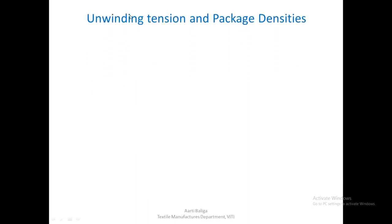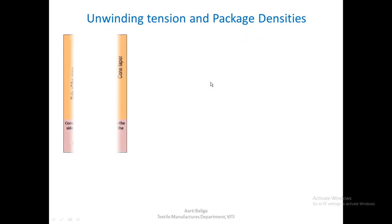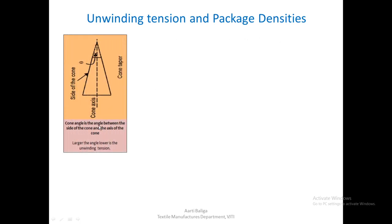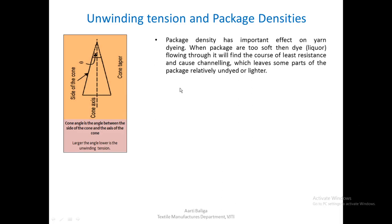Having seen all these parameters that affect package density, let us now see the unwinding tension and package densities. First, the cone angle — the angle between the side of the cone and the axis of the cone. Larger the angle, lower is the unwinding tension, which will directly affect the unwinding tension. Let us also see what parameters affect the package densities.